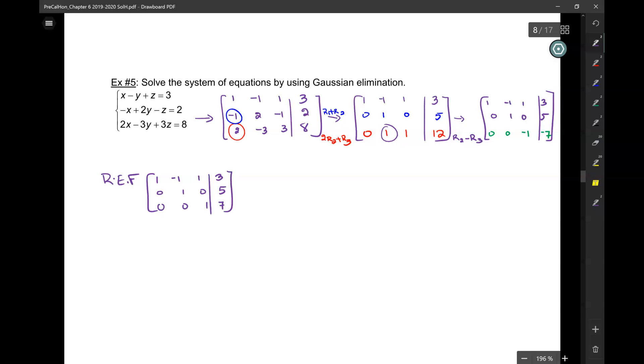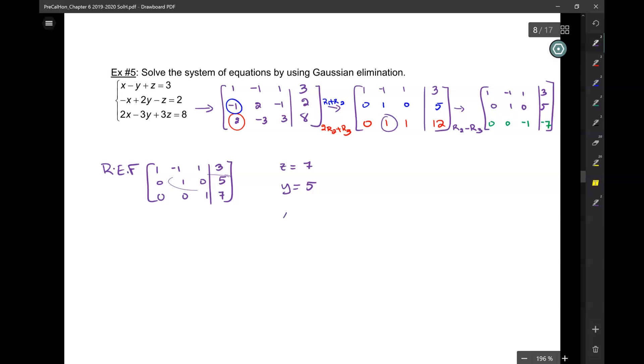So, I'm done. So, Z is 7. What do I get from here? Y is 5. And then, when you do the rest, X is 1. So, it's 1, 5, 7. And we're over.